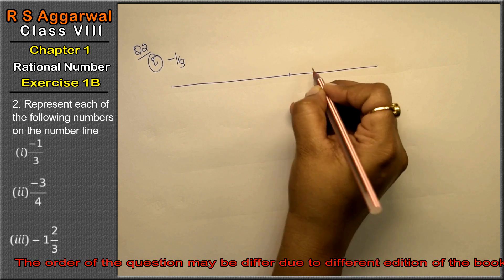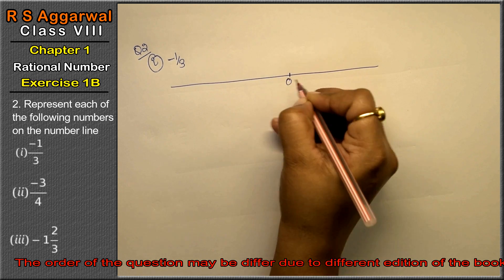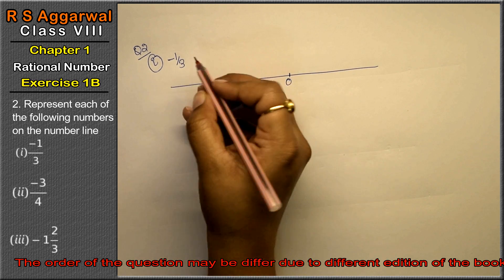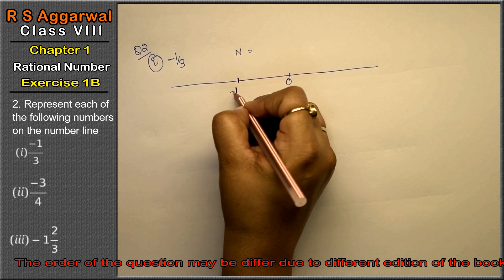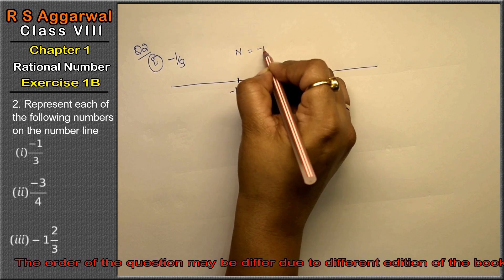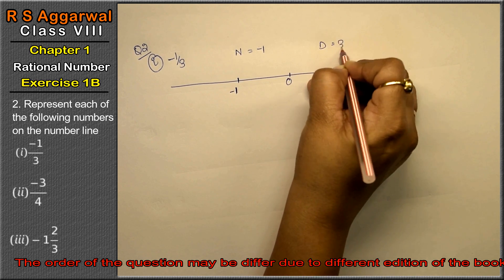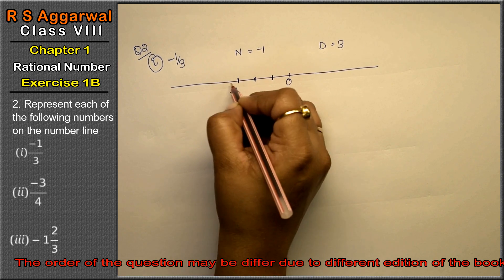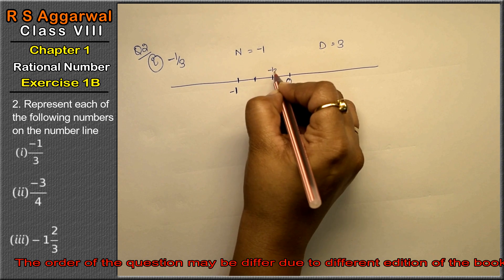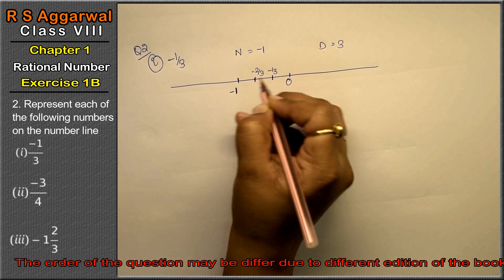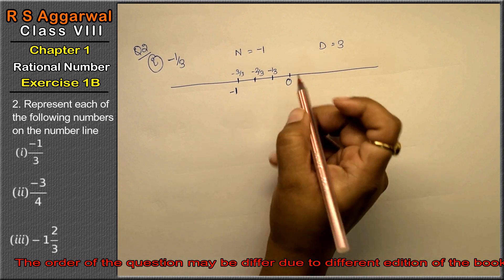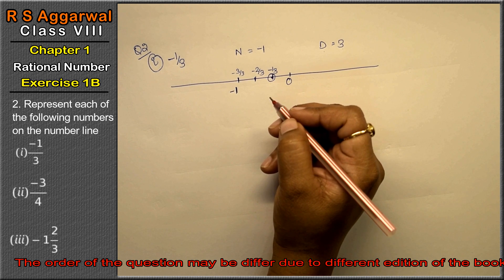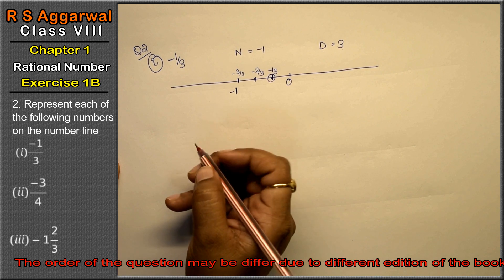Ab tak friends hum positive numbers le rahe the jo 0 ke right hand side pe the. Ab hum negative numbers lenge to 0 ke left hand side honge. Numerator kya huwa minus 1 and denominator kitna huwa 3. To 3 parts karo: minus 1 upon 3, minus 2 upon 3, and minus 3 upon 3. So minus 1 upon 3 - this is the number on the number line.